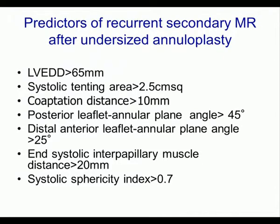The Leiden group — Robert De Jong — has identified the following predictors of recurrence after undersized annuloplasty: systolic tenting area, coaptation distance more than 10 mm, posterior leaflet-annular plane angle more than 45°, anterior leaflet-annular plane angle more than 25°, systolic inter-papillary muscle distance more than 20 mm, and systolic sphericity index more than 0.7. When these factors are present, we know from the outset that the patient will do poorly after undersized annuloplasty — these are the candidates for mitral valve replacement.